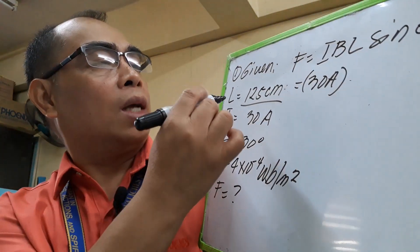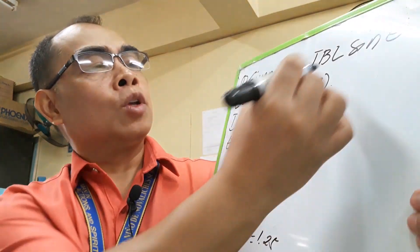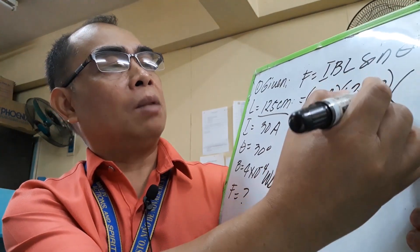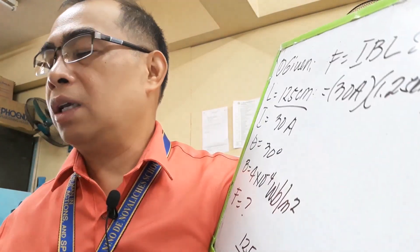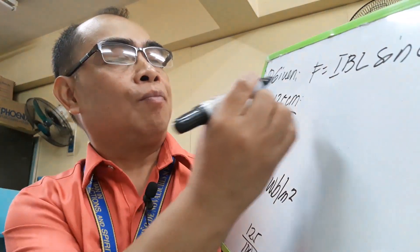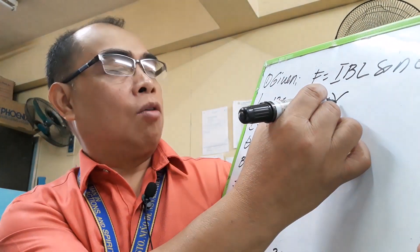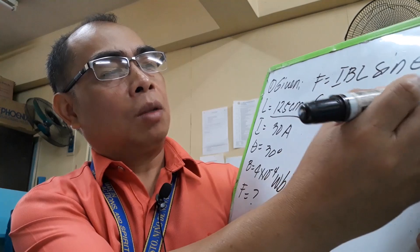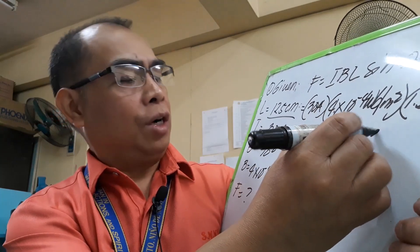Using the formula F = IBL sin θ, where I = 30 amperes. We first convert the length: 125 cm divided by 100 gives us 1.25 meters. So we have F = 30 × (4 × 10⁻⁴) × 1.25 × sin 30°.